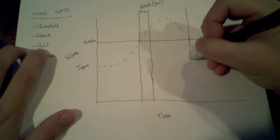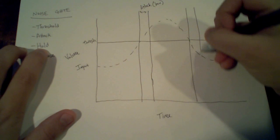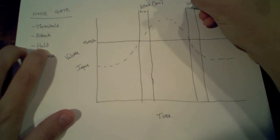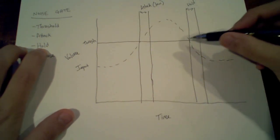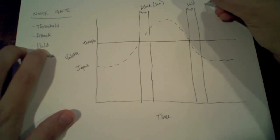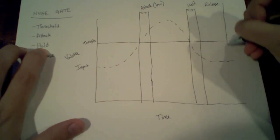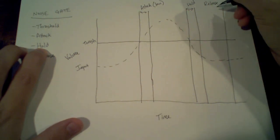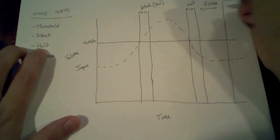Hold is the amount of time after the input signal has passed back below the threshold that we still hear the input signal just as it originally was. Release is the amount of time after the hold that it takes for the signal to get back down to zero decibels.